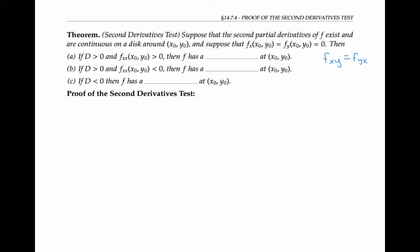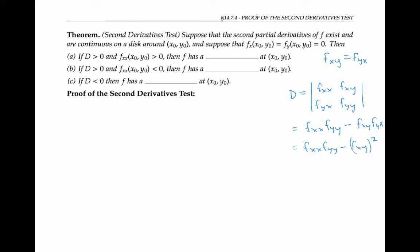Assuming that condition, suppose we have a critical point (x₀, y₀) such that the derivative in the x direction and the derivative in the y direction are both zero. We calculate the discriminant D, which is the determinant of the matrix with entries f_xx, f_xy, f_yx, f_yy — in other words, f_xx · f_yy minus f_xy · f_yx, or equivalently f_xx · f_yy minus f_xy squared, using Clairaut's theorem. It's called the discriminant because it helps us discriminate between what kind of feature our graph has at the critical point.